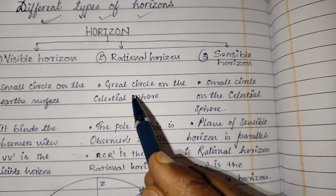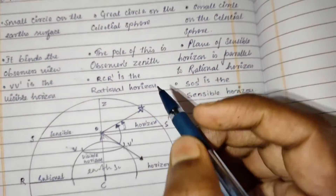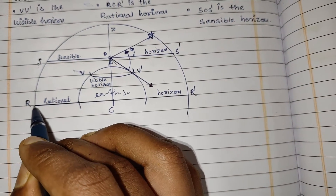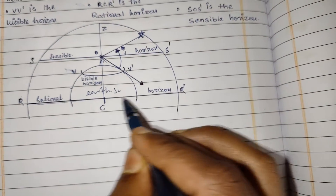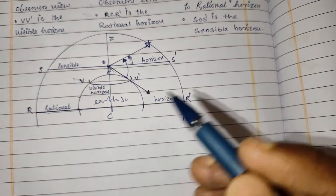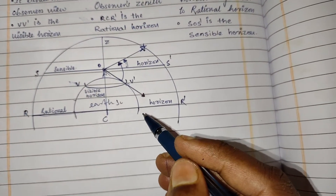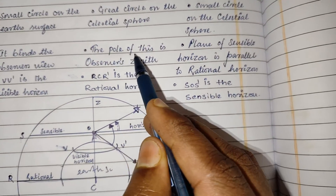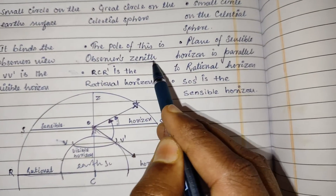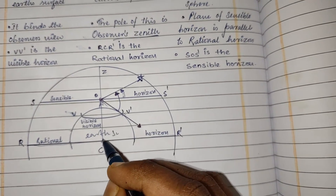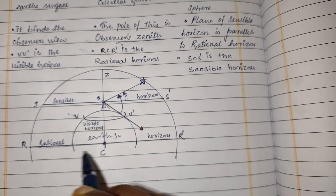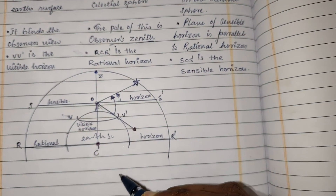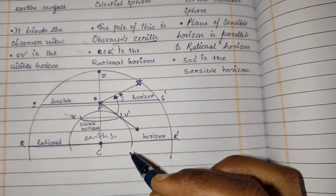Now let's see the rational horizon. Rational horizon is a great circle on the celestial sphere. There are a lot more great circles on the celestial sphere, but the rational horizon is the great circle whose pole is the observer's zenith. The rational horizon is RCR dash and its pole is the zenith.